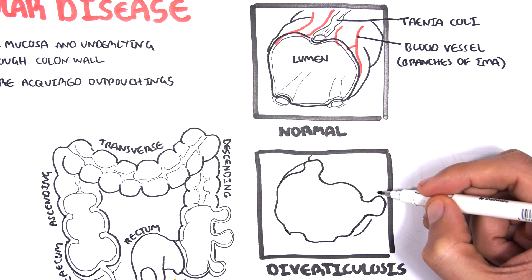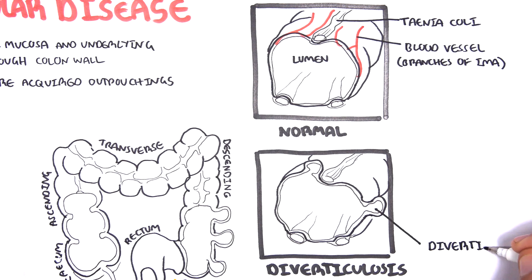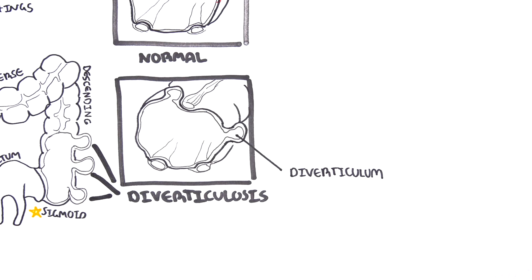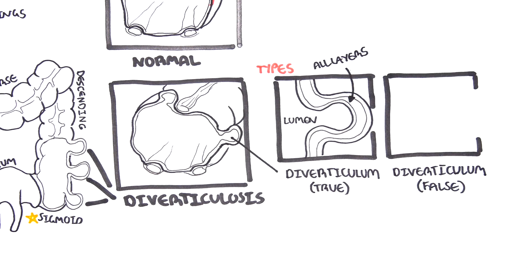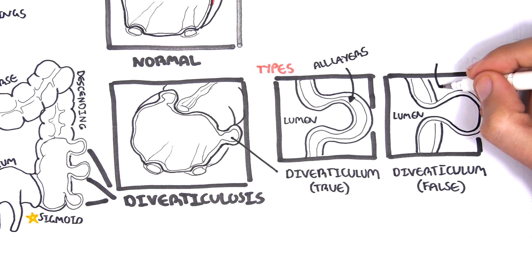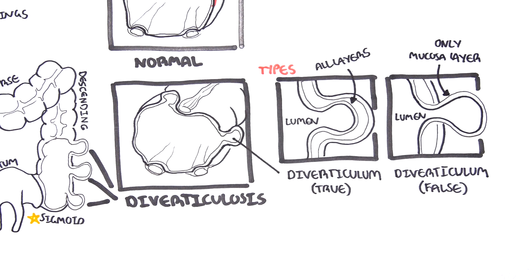In diverticular disease, you have diverticulosis — the presence of many outpouchings within the colon. These outpouchings can be divided into true or false diverticula. In a true diverticulum, all the layers of the colon wall are involved in the outpouching. However, in a false diverticulum, only the mucosa and submucosa are involved — the muscle layer remains intact. The false diverticulum is the acquired type, seen in the adult population, whereas a true diverticulum is congenital, seen in infants.